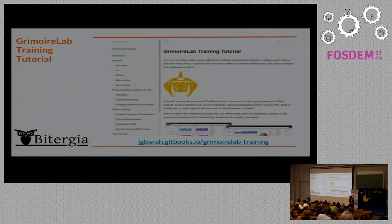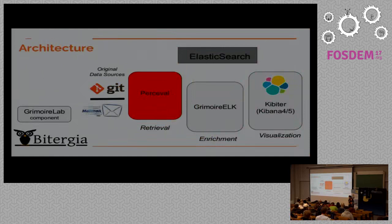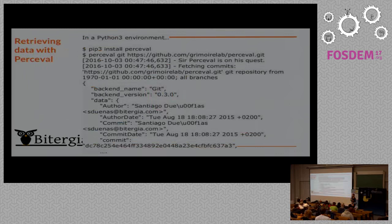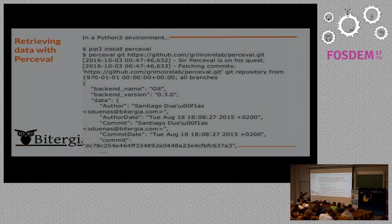Let's be practical and start with Perceval. Perceval gets information from repositories and produces JSON files. It's Python 3, so you just get a Python 3 environment, install with pip — pip install perceval — and you have the latest version. Then you just run it. Perceval is both a Python module and a script. In this example I run it with the Git backend on a URL, which is the Git repository of Perceval itself. It clones the repository, runs git log with all sorts of options, and starts producing JSON documents with the repository information. You can do exactly that for about 20 different data sources.